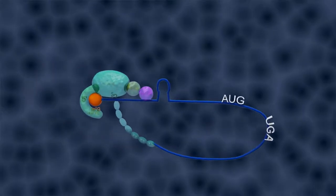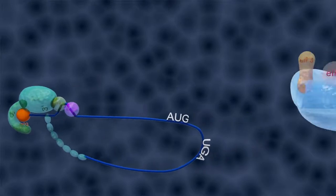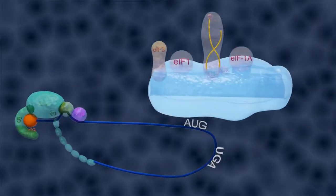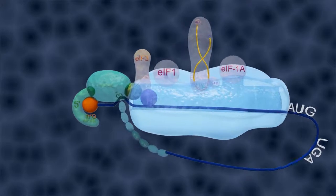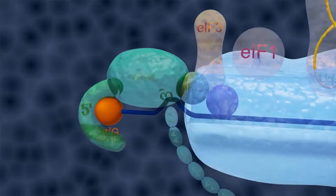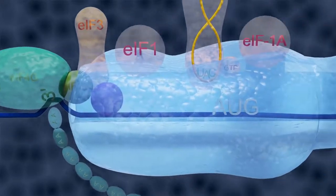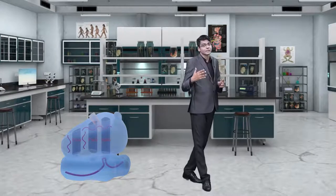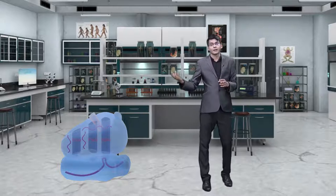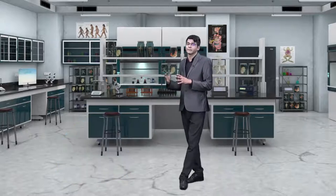Will protein synthesis happen on the ribosome? Yes. The mRNA will go and bind on the ribosome. Which subunit binds? Whether in prokaryotes or eukaryotes, it is the small subunit that binds with the mRNA. So in prokaryotes the 30S subunit binds with the mRNA, and in eukaryotes the 40S subunit binds with the mRNA.